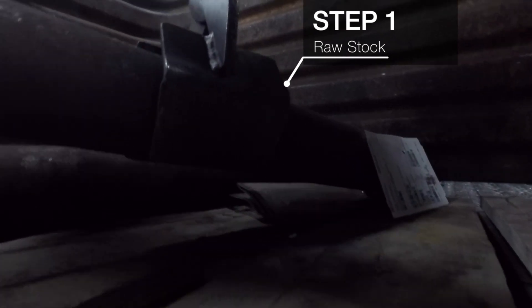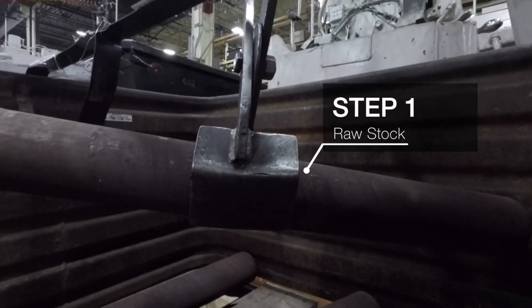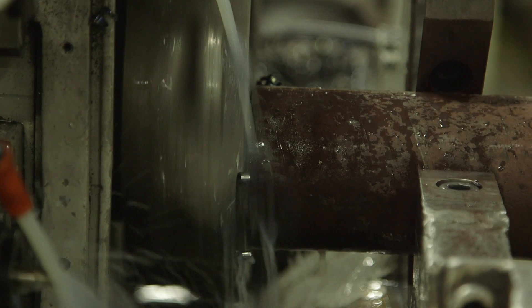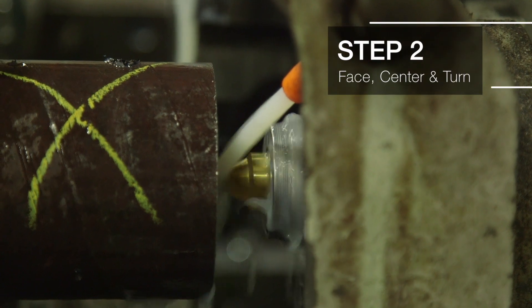First, raw material is meticulously sourced by our team of engineers for each and every component. From there, we begin the process of cutting both ends of the material and adding a center hole to each end to center the shaft.